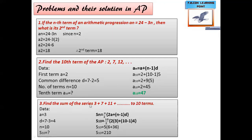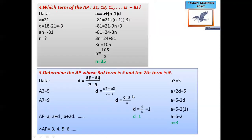Next, question number three: find the sum of the series 3 plus 7 plus 11, up to 10 terms. We substitute all the values in the sum formula. First we solve the brackets: 2 into 3 is 6, and (n minus 1) into d = 9 into 4 = 36. Then we add and multiply by 5, and we get the answer as 210.